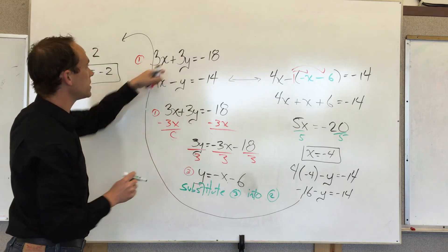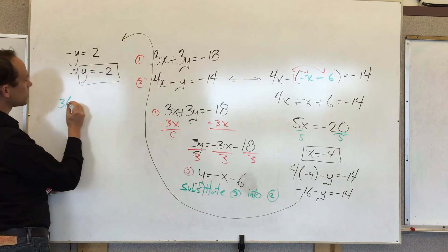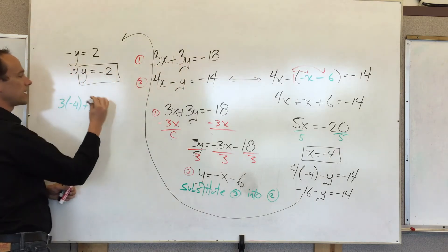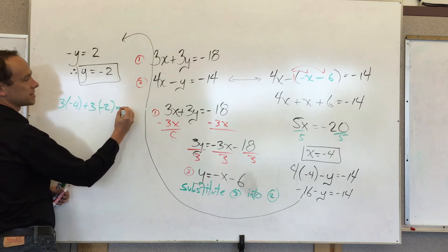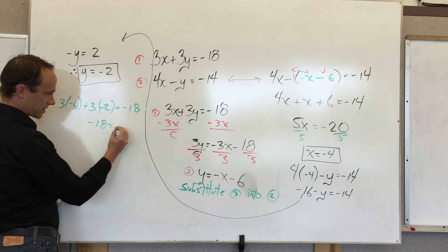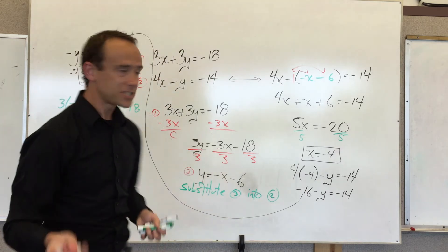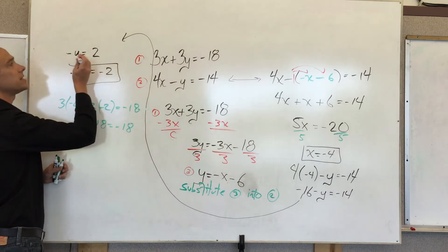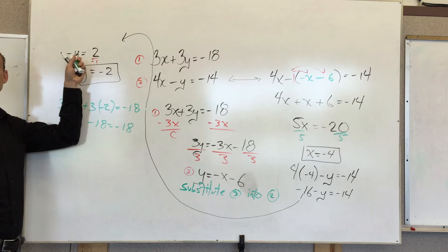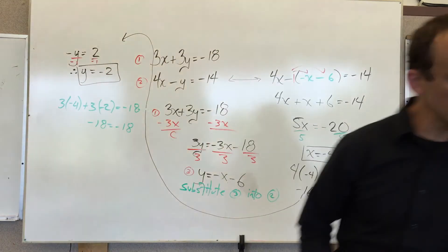You can check it if you will by plugging those values back in and seeing that the answer is right. I'll do that. I'll do it for this one right here. So I'm going to go 3 times, instead of x I'm writing negative 4, plus 3, instead of y I'm writing negative 2, is equal to negative 18. Negative 18 is equal to negative 18. Holla! And I jumped this step right here. But what I did is I divided by negative 1. That's how you get rid of a negative sign. A negative variable like that. So the positive became negative. Beautiful!